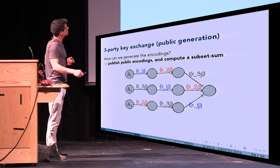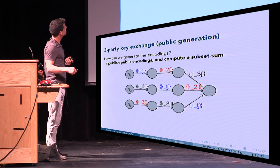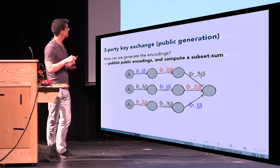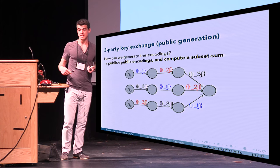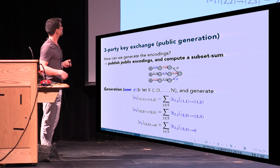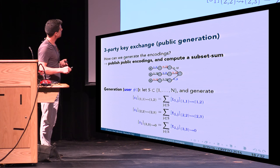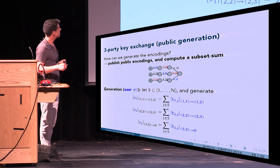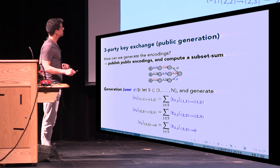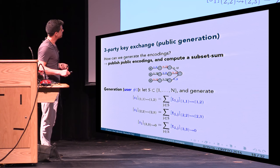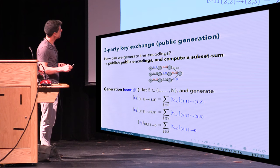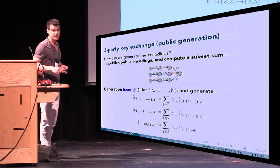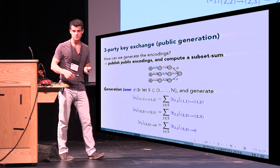In practice, each user generates a random set of n indices and generates an encoding of their secret s_i along the appropriate paths. User one generates encodings of s1 on these paths, user two and user three do the same, and the protocol proceeds as a subset sum computation over these public encodings.